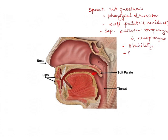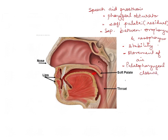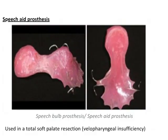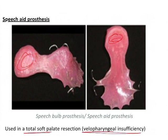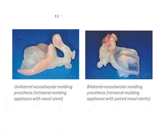It allows controlled movement of air so there can be a good amount of palatopharyngeal closure. As you can see, this part goes into the defect of the soft palate and allows the patient to have better airflow. This is used in total soft palate resection, which is also known as velopharyngeal insufficiency.